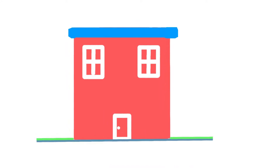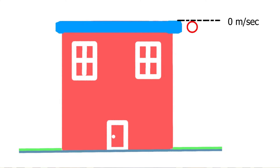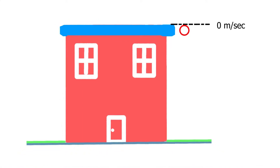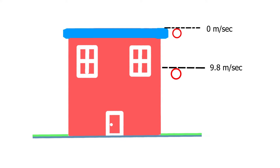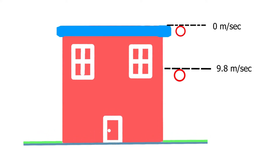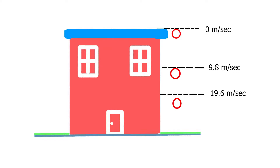We will consider the building and the point of an object. The first second is 0 meters per second. The second second is 9.8 meters per second. Then the second second is 19.6 meters per second, and the third second is 29.4 meters per second. This means the acceleration increases by 9.8 meters per second each second.